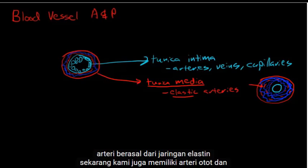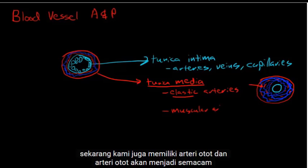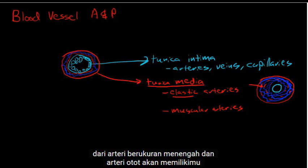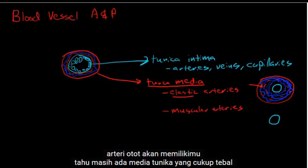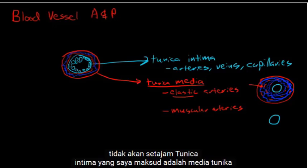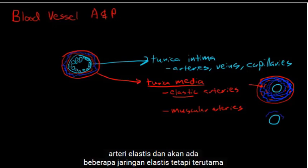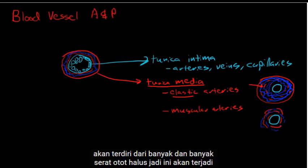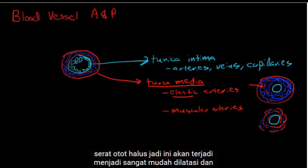We also have muscular arteries, which are the mid-sized arteries. Muscular arteries have a fairly thick tunica media — not quite as thick as in elastic arteries — with some elastic tissue, but it's primarily made up of lots and lots of smooth muscle fibers. So these are very amenable to dilation and constriction.